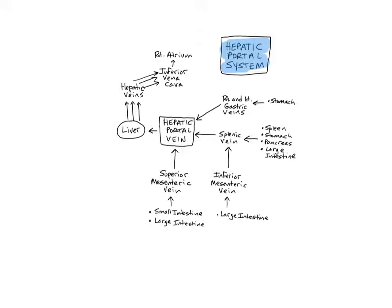The hepatic portal system is like a bypass, similar to a highway bypass around a city, rerouting the venous blood flow in the abdomen around the inferior vena cava and instead delivering it into the liver.